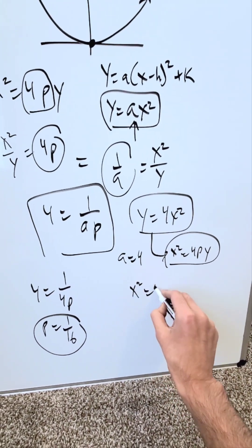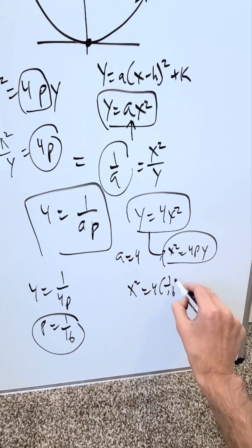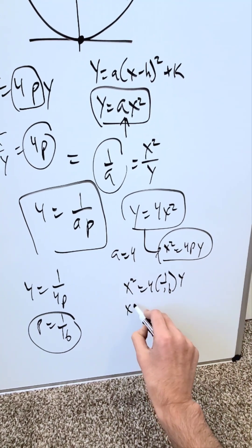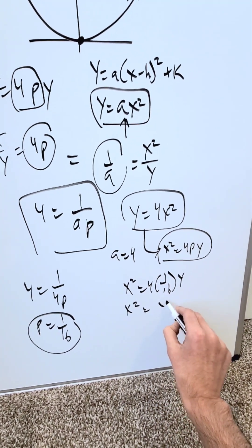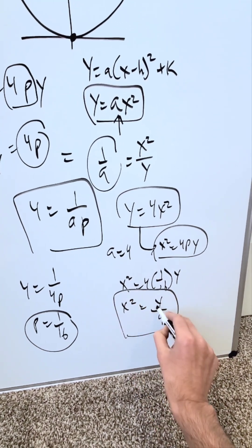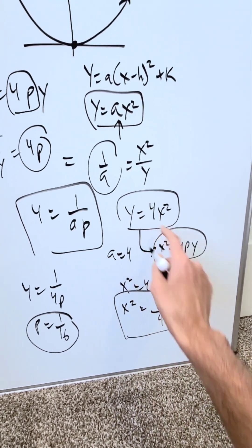When you look at it in this form, I have x squared equals 4 times p, which is 1 over 16, times y. When you simplify this, you'll have x squared equals y over 4. So you have that form, but this form is exactly equal to that form.